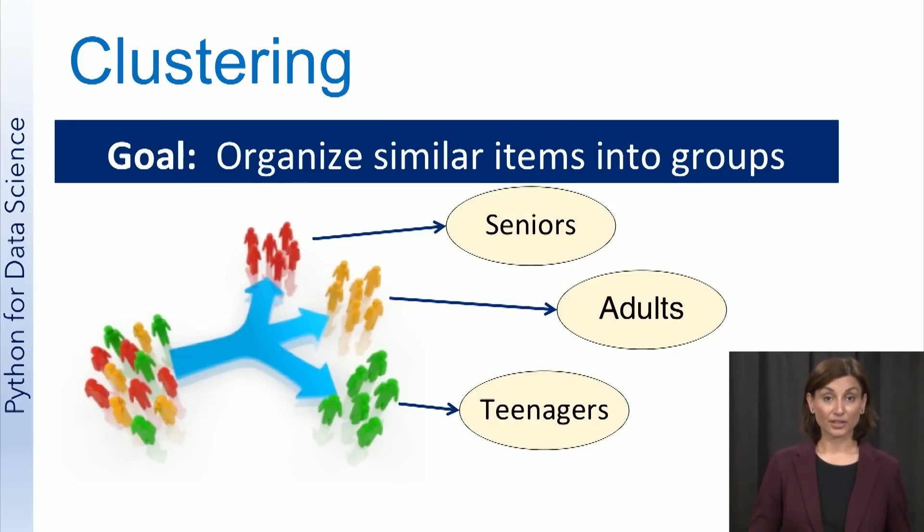Next is clustering. In clustering, the goal is to organize similar items into groups. An example is grouping a company's customer base into distinct segments for more effective targeted marketing, like seniors, adults, and teenagers, as we see here.